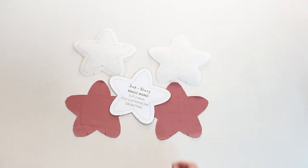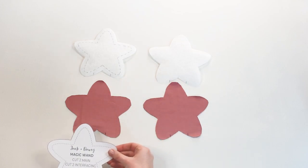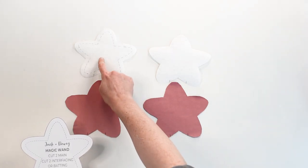After printing off your pattern pieces available in the link below, cut two of your main fabric and two of your interfacing or batting fabric.